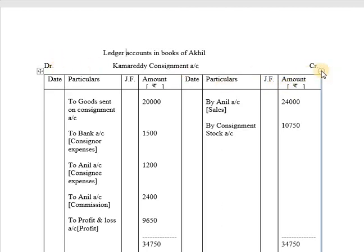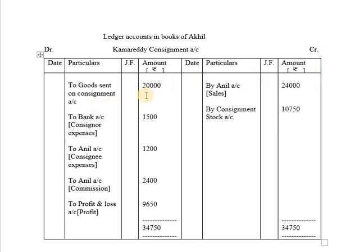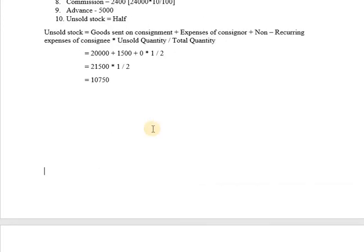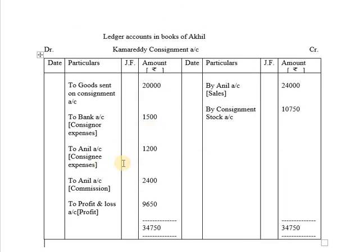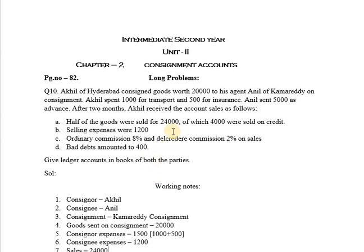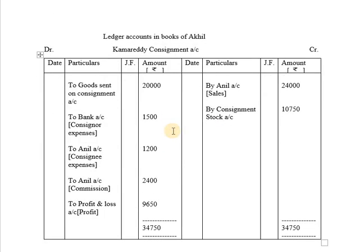Towards the extreme left will be the rating DR (Debit) and towards the extreme right will be CR (Credit). On the debit side it will be recorded as 'To Anil Account' for consignee expenses of Rs. 1,200. On the credit side it will be recorded as 'By Anil Account' for sales of Rs. 24,000. Then 'To Anil Account' for commission — 8% ordinary commission plus 2% Del Credere commission, total 10% on sales.